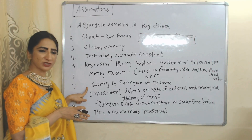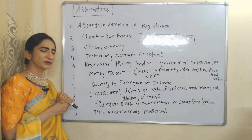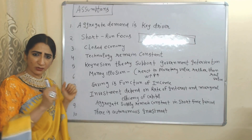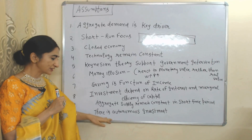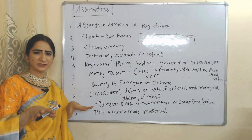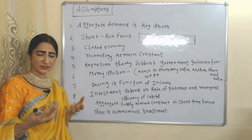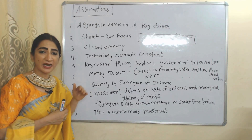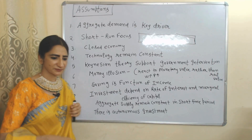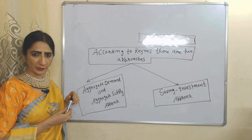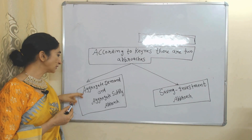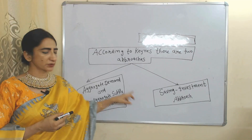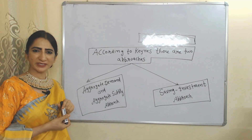Saving is a function of income. Investment depends on rate of interest and marginal efficiency of capital. Aggregate supply remains constant during the short time period. There is autonomous investment — Keynes mainly focuses on autonomous investment because he supports government intervention, and autonomous investment is mainly done by government. According to Keynes, there are two approaches to determine income and output: the Aggregate Demand and Aggregate Supply approach, and the Saving and Investment approach.